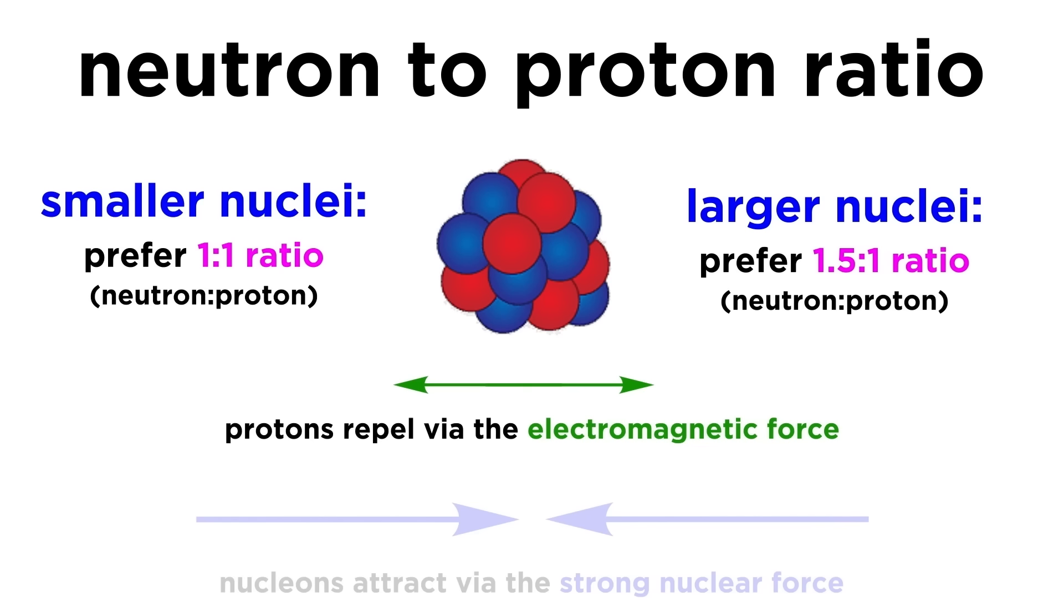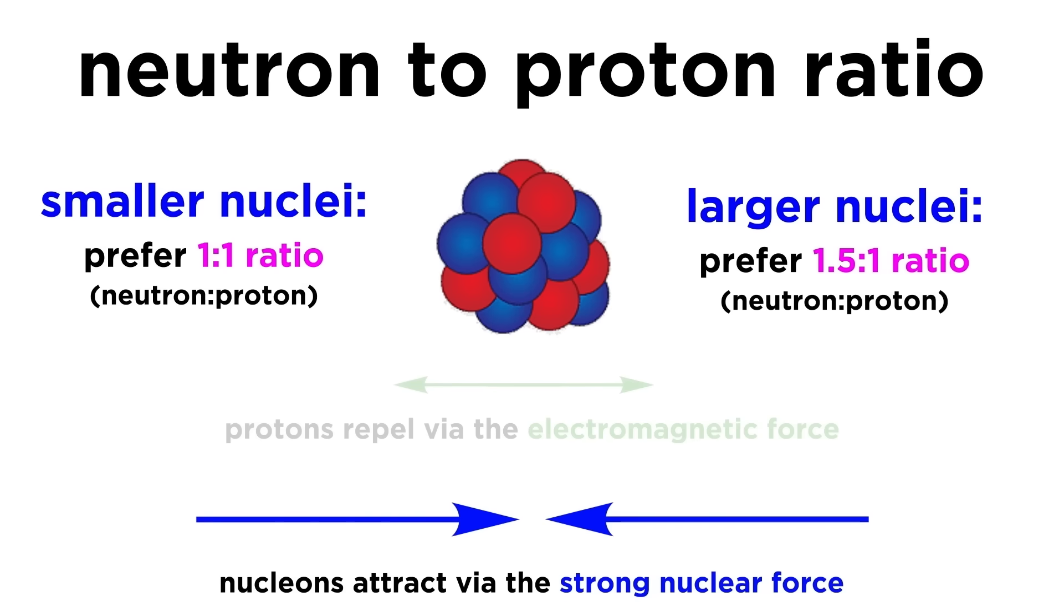This is because as more and more protons are added to the nucleus, the repulsion between them gets greater and greater, so more neutrons, which are of neutral charge, are needed to diffuse some of that repulsion.